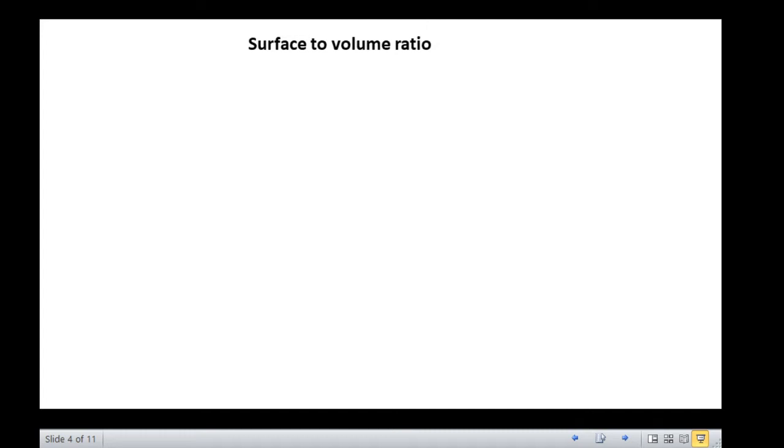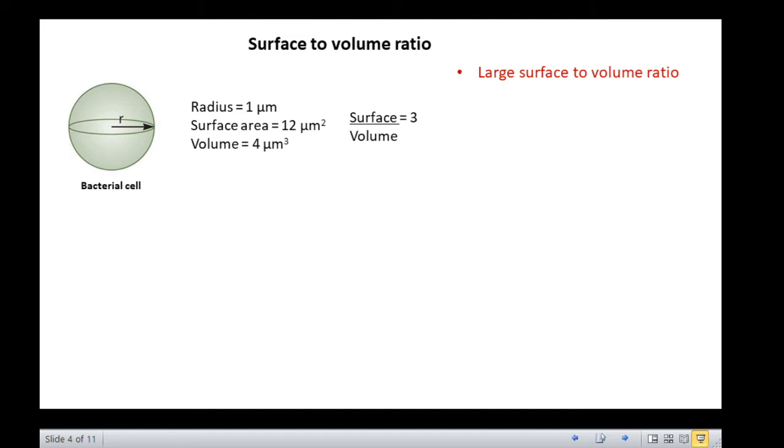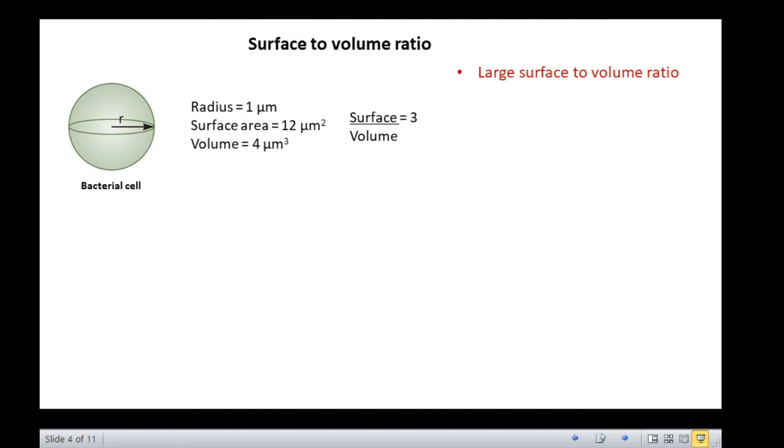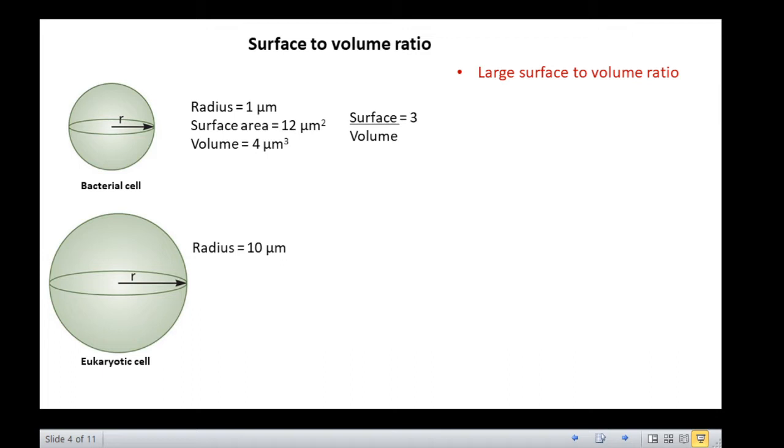Because of their small size, bacteria have a large surface to volume ratio. For example, let us consider a spherical bacterium with a radius of 1 micrometer. The surface area would be about 12 micrometer square and a volume of about 4 micrometer cubed. The surface to volume ratio would be 12 to 4, or 3. Now, consider a larger eukaryotic cell with a radius of 10 micrometers. It would have a surface area of about 1200 micrometer square and a volume of about 4000 micrometer cubed.